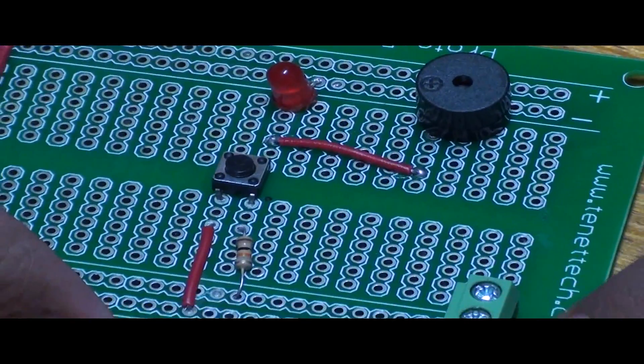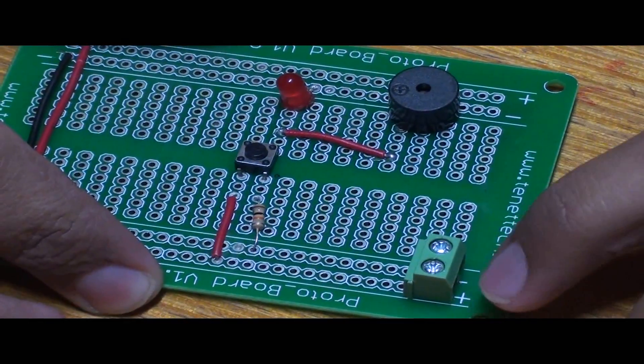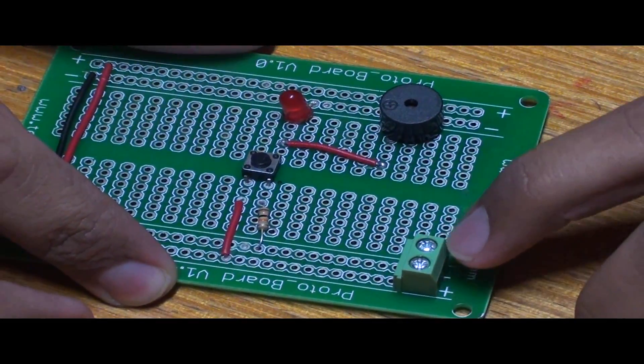So from here, from this plus you can connect a power supply, 5 volt supply and from the negative we can connect it to the ground.